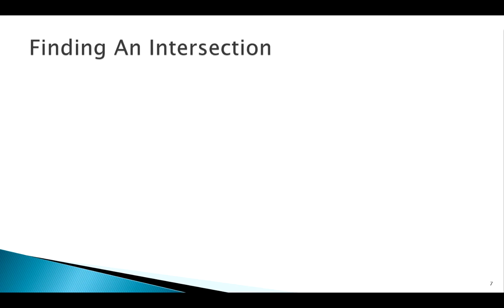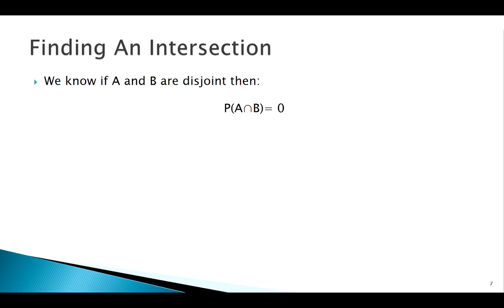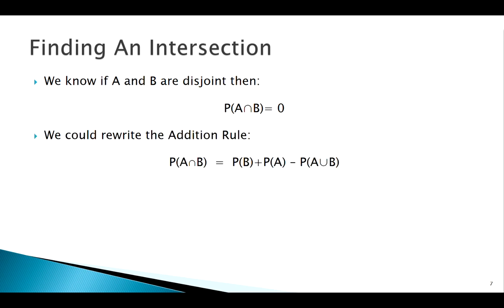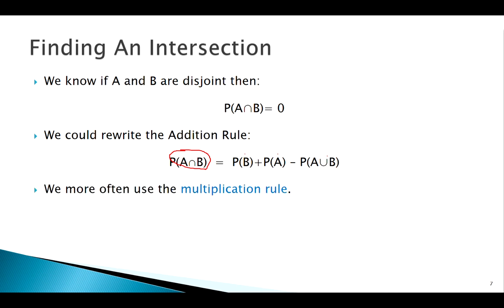What about intersections? We already know one thing: if A and B are disjoint, the intersection doesn't exist — it's zero. If we're finding a mutually exclusive intersection, that's easy, it's zero. Another way is to take that addition rule and rewrite it — if I'm given the union and the two pieces, I could solve for the intersection. But oftentimes we don't have the union; we may just have information about A and B and want to find the intersection. So what do we do?